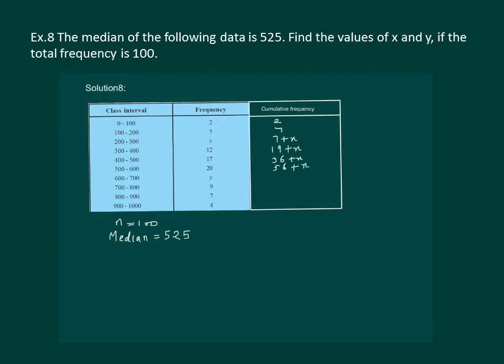56 plus x plus y plus 9 will give us 65 plus x plus y, 72 plus x plus y plus 4, 76 plus x plus y.